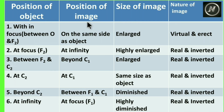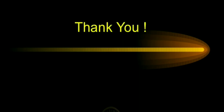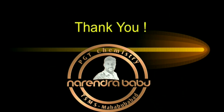So these are the different types of images that form when the object is placed at different positions in front of a convex lens. Thank you for watching this video.